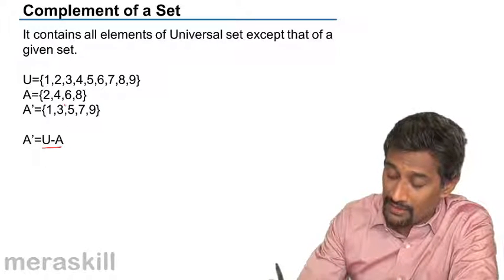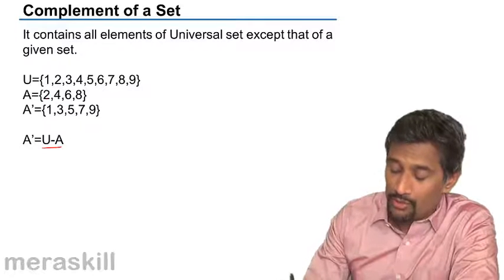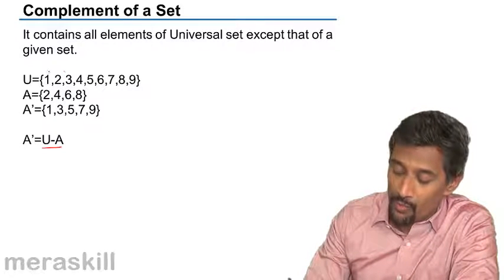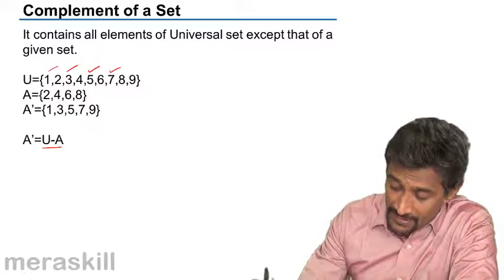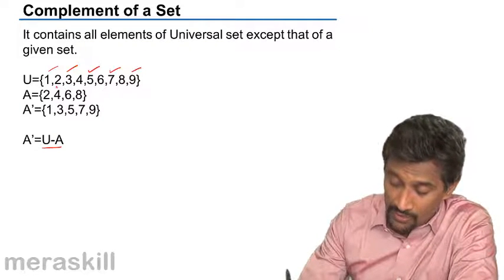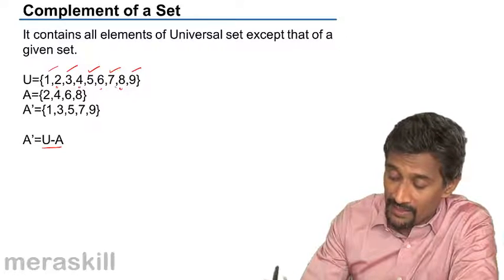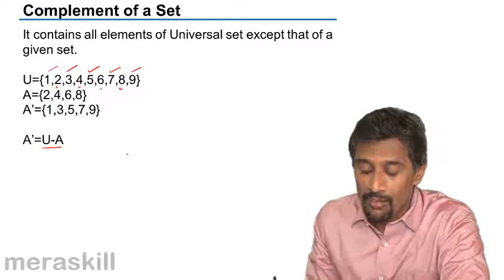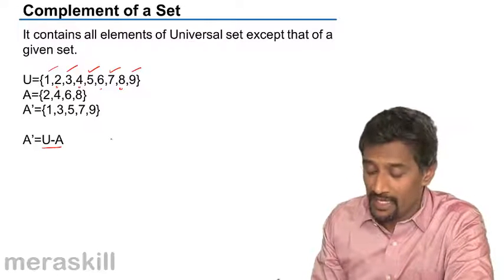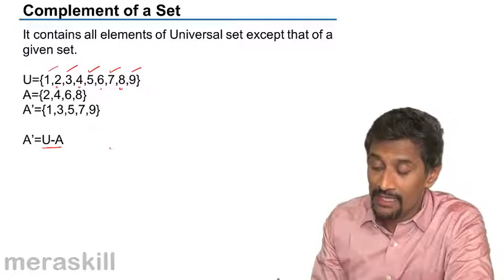U minus A will contain not 2, not 4, not 6, not 8. So it is going to be 1, 3, 5, 7, 9. Because the remaining 2, 4, 6 and 8 are present in A. So A dash is going to be 1, 3, 5, 7, 9 which is U minus A.